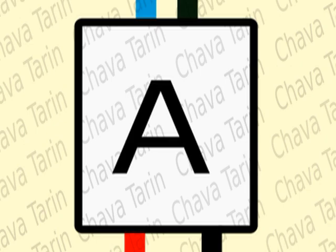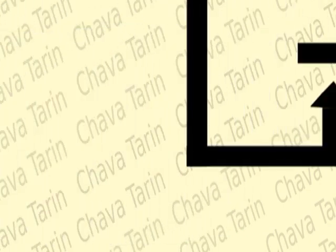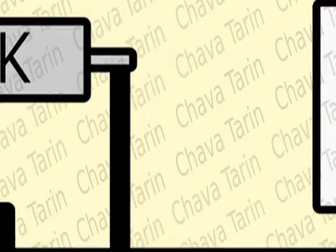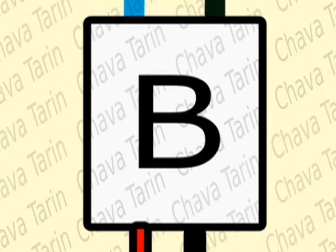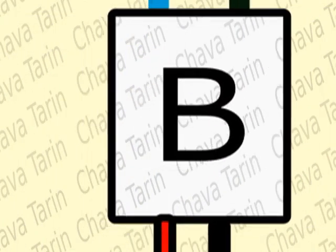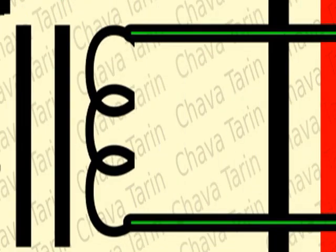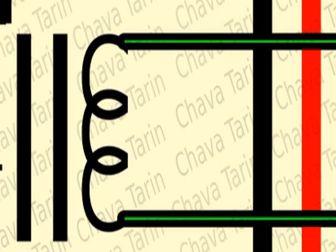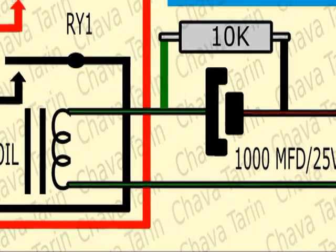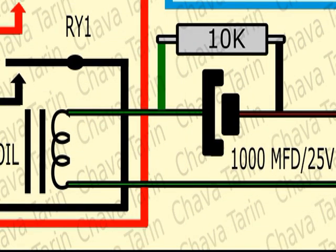More about this power supply in a moment. The other power supply is a small one, and it is only used for driving a DC relay, RY1, which together with a capacitor and a resistor is used as a timer to apply the braking for just one second.